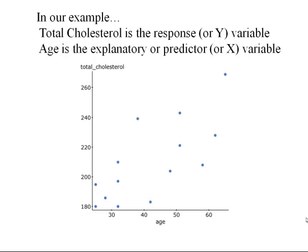I chose cholesterol to be the y-variable and age to be the x-variable, and there's a reason for that. It's typical in these kinds of problems that we want to describe or predict one variable as a function of the other. The variable that we want to predict goes on the y-axis — it's often called the response, and sometimes called the dependent variable. The other variable, the one on the x-axis, is often called the explanatory or predictor variable, and you'll also hear it referred to as the independent variable.